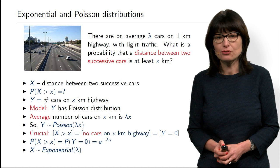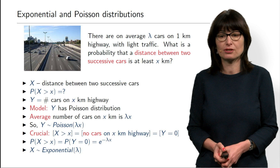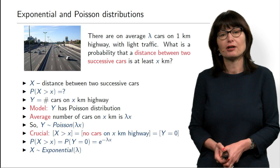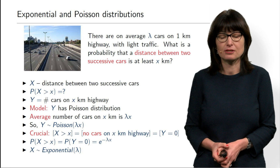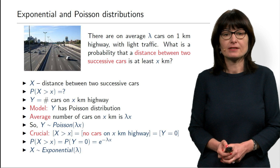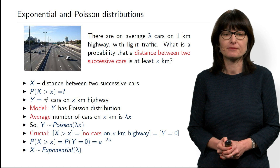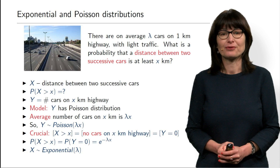The same applies to a call center: the number of calls per hour is Poisson distributed — for example with parameter 20, meaning on average 20 calls per hour. Then the average duration between calls is 1/20 of an hour, which could be 3 minutes. That is the beautiful connection that is very useful and often used in modeling real systems. That concludes this story about exponential distribution. Thank you very much for your attention.